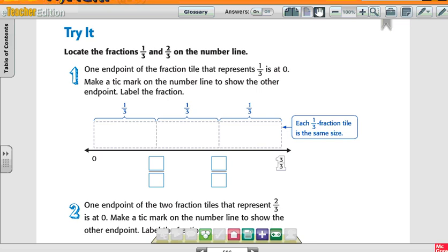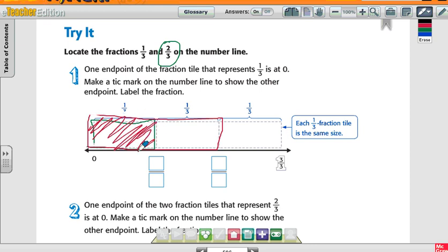One-third represents one part, two-thirds represents two parts, and three-thirds represents three parts of the whole. Then it says, look at the fractions one-third and two-thirds on the number line. One end point of the fraction tile that represents one-third is at zero. So, it starts here. Here's one-third. If I want to know what two-thirds is, how many more tiles do I need to get another tile, right?